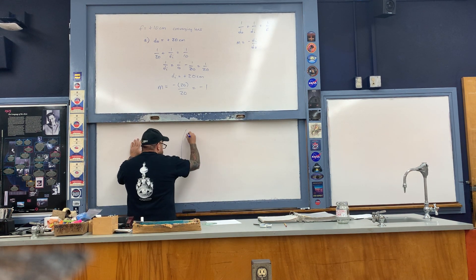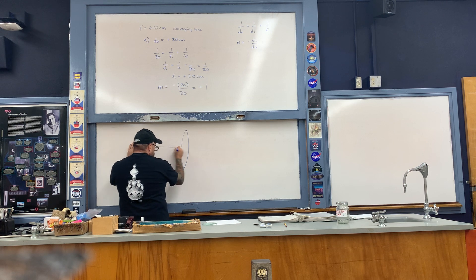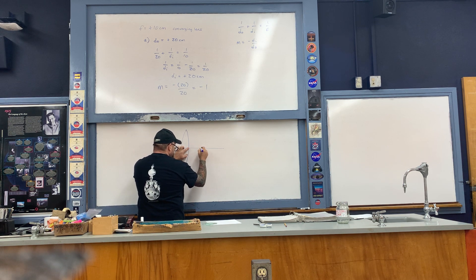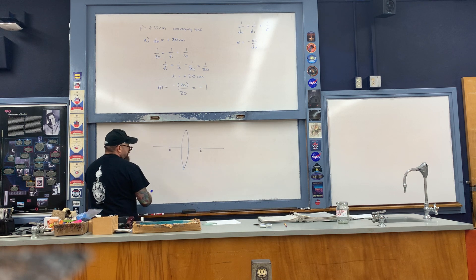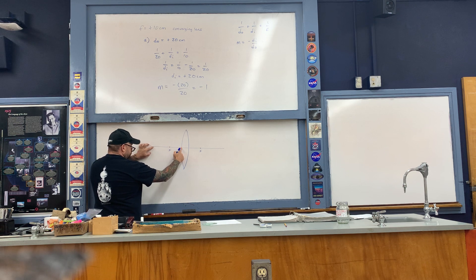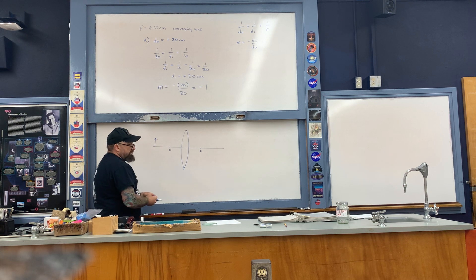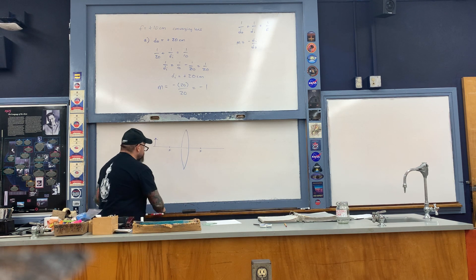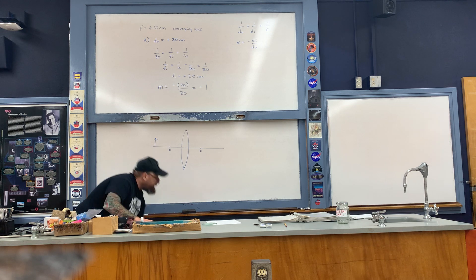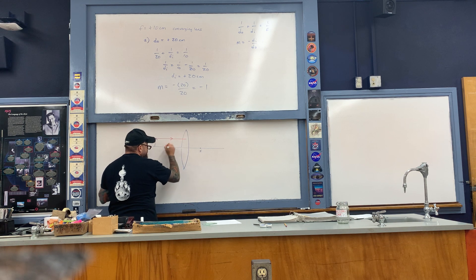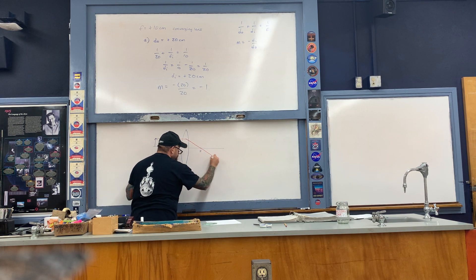Here's how we draw this situation. Here is the double convex converging lens, with the optical axis running through it. The focal length is 10 centimeters on each side of the lens. The object distance in part a is 20 centimeters. I'll refract two light rays through the lens. The first light ray is drawn from the tip of the arrow, parallel to the axis, and then refracts through the focus out the other side.